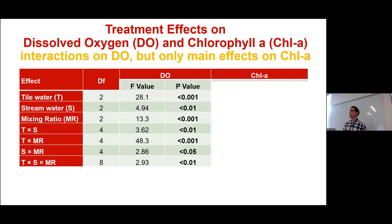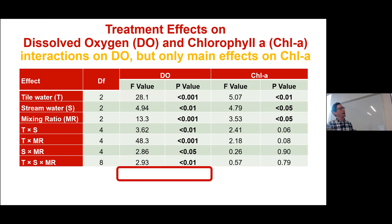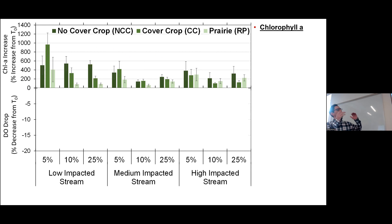From left to right — low impacted to more impacted — we mixed those tile water sources with the stream water sources. We had a couple of different mixing ratios: 5% tile water to stream water, 10%, and 25% — where 25% would be like a deluge of nutrients. So more of a trickle at 5%, medium at 10%, and a larger proportion at 25%.